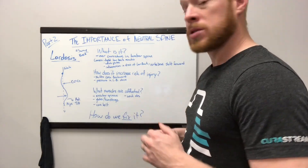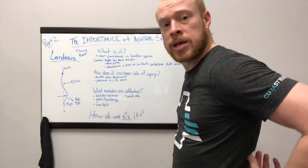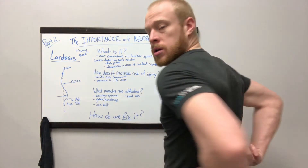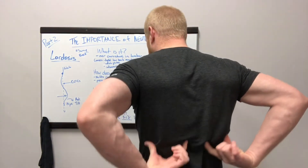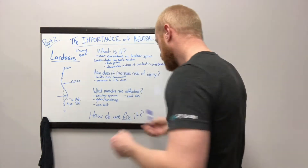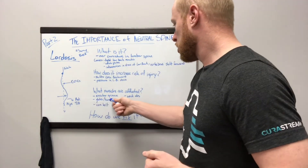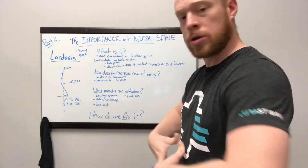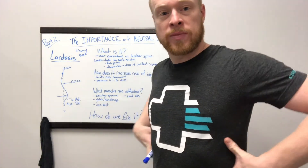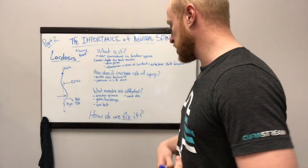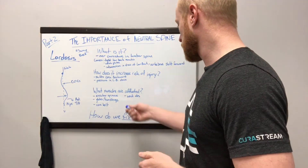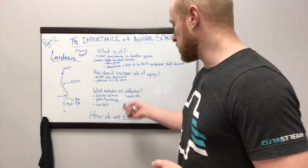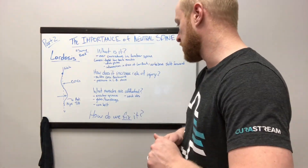Muscles affected: erector spinae, which run right along the spine. Glutes and hamstrings. The core belt — we have the obliques, the abdominals, the transverse abdominals, and as I just mentioned, weak abs.